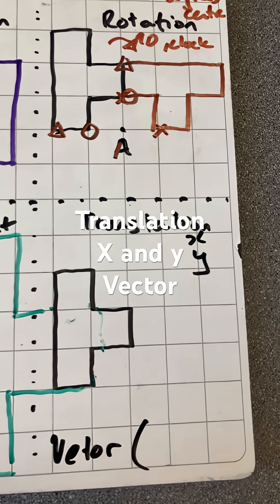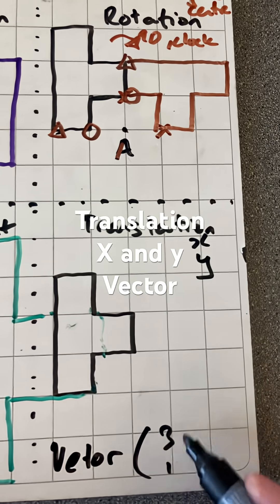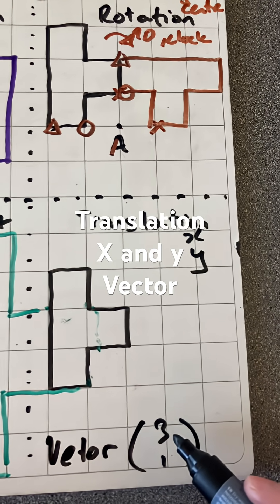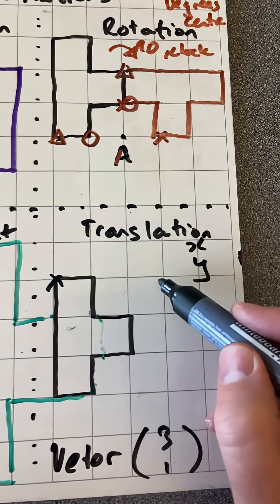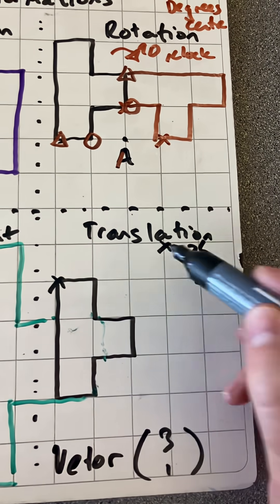So I'm going to use the vector three, one, which means three in the X direction and one in the Y direction. So if I put across there one, two, three, and one up there, it moves to there.